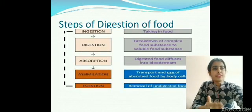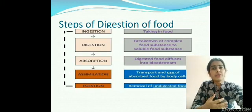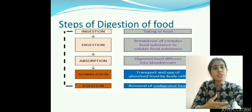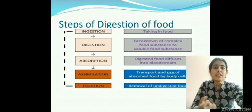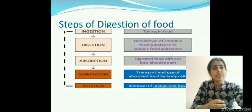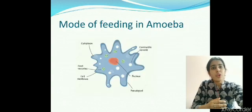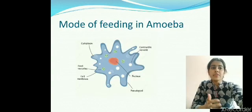Here are some steps of digestion of food. First is ingestion — when we take in and consume the food. Then digestion. Absorption is when nutrients are absorbed by the body of the organism and passed on to the bloodstream. Assimilation is when it is transported and used by the body cells. Egestion is when the waste products are eliminated out of the organism's body. Every organism needs to follow these steps of digestion.